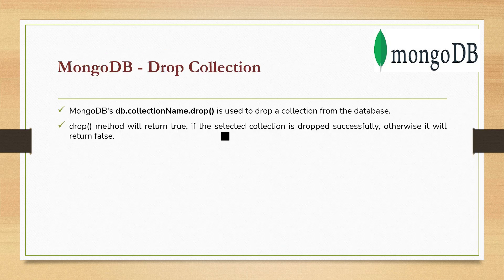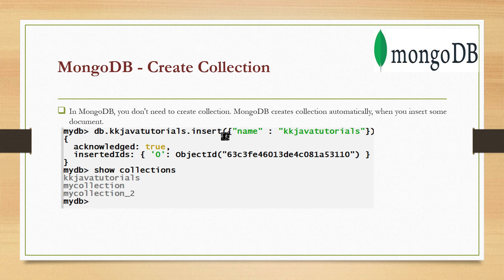To drop a collection, use db.collectionName.drop(). If the drop is successful, it returns true; otherwise it returns false. One important tip: in MongoDB, you don't need to explicitly create a collection. MongoDB creates a collection automatically when you insert one or more documents. So if a collection like 'kkjava_tutorials' doesn't exist and you insert a document, MongoDB will automatically create it.